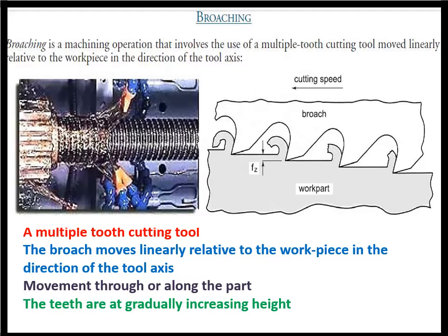This is how a broach tool looks like — a broach tool in cutting operations where you can see how the cutting fluids or coolant is flushed on the broaching surfaces. This tool has four important features. One, it has multiple cutting teeth. The tool always moves linearly relative to the workpiece and always in the direction of the tool axis. Third, the movement is through or along the bar. And in the left-hand side of the picture, you can see how the successive teeth are at gradually increasing height.